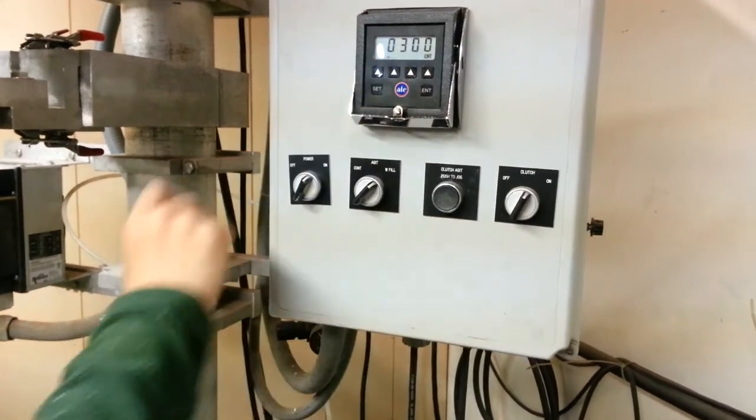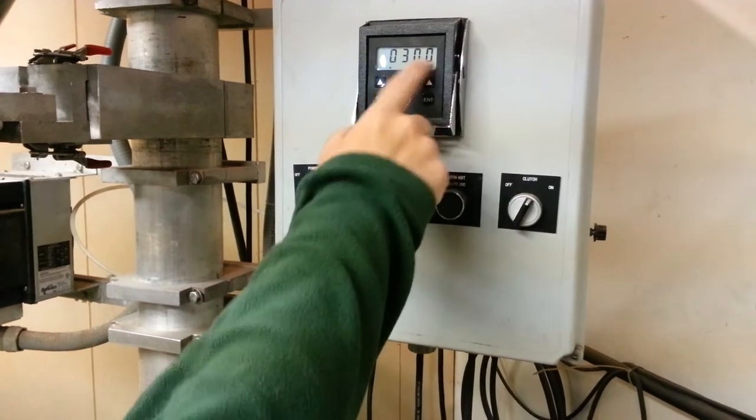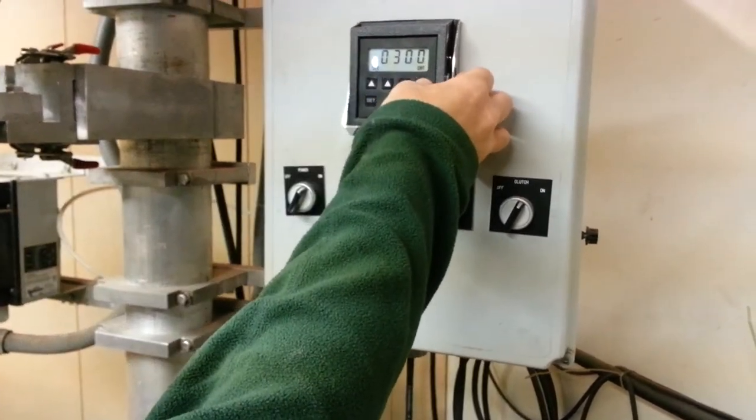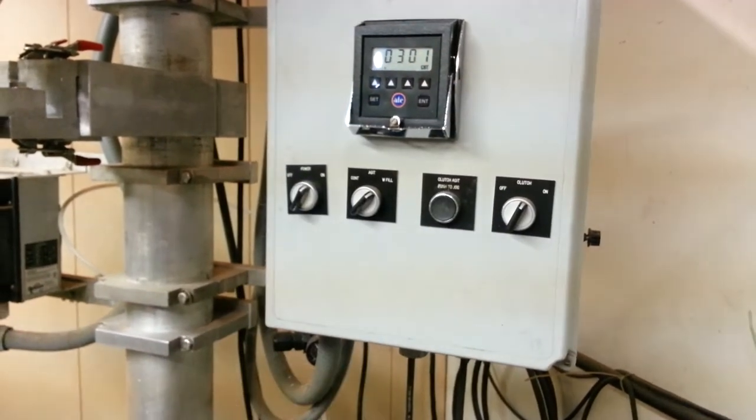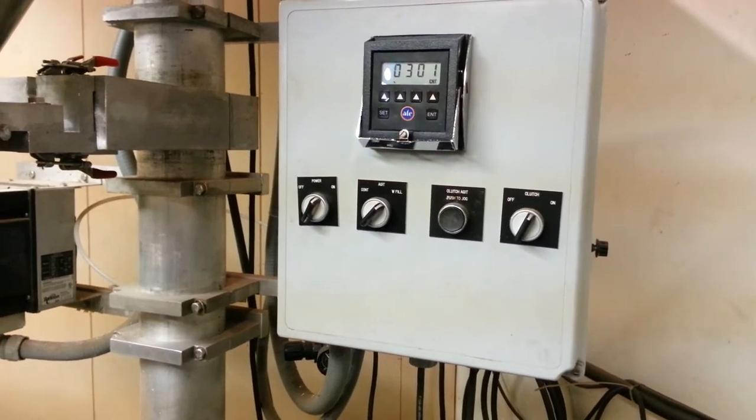Right now we're setting the counter at 300, which is three turns. We can change this very easily if we wanted to do three full turns of the auger and one one-hundredth of a turn. It can go to one one-hundredth of a turn. For now we're going to do three full rotations and one one-hundredth of a turn.